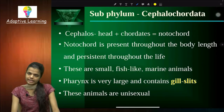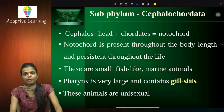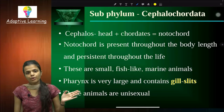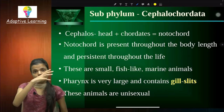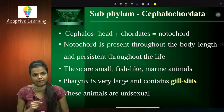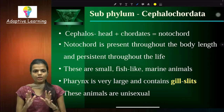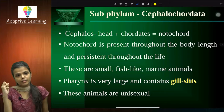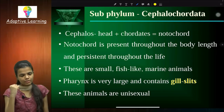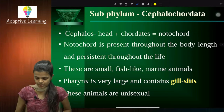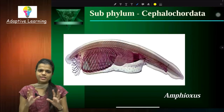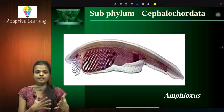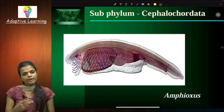Now, subphylum Cephalochordata. Cephalo means head. They are more advanced compared to Urochordata. Here, the notochord is present throughout the body length and persists throughout life. They are small fish-like animals — not fish, but fish-like — and they use gill slits for aquatic respiration. These animals are unisexual. An example is Amphioxus.